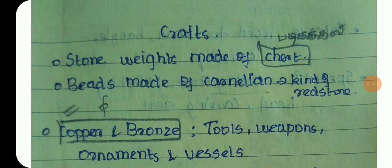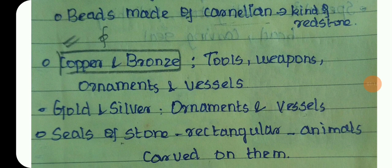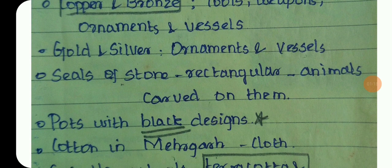Craft materials include stone weights, carnelian beads, copper and bronze items, gold and silver objects. Seals are made in stone — rectangular in shape with animal figures.